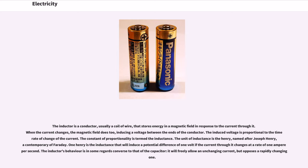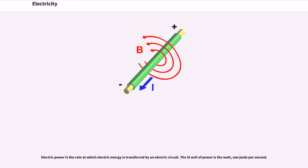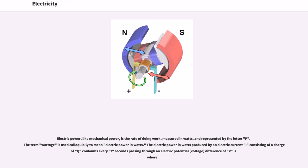The unit of inductance is the henry, named after Joseph Henry, a contemporary of Faraday. One henry is the inductance that will induce a potential difference of one volt if the current through it changes at a rate of one ampere per second. The inductor's behavior is in some regards converse to that of the capacitor: it will freely allow an unchanging current, but opposes a rapidly changing one. Electric power is the rate at which electric energy is transferred by an electric circuit. The SI unit of power is the watt, one joule per second. Electric power, like mechanical power, is the rate of doing work, measured in watts and represented by the letter P. The electric power in watts produced by an electric current I consisting of a charge of Q coulombs every T seconds passing through an electric potential difference of V.